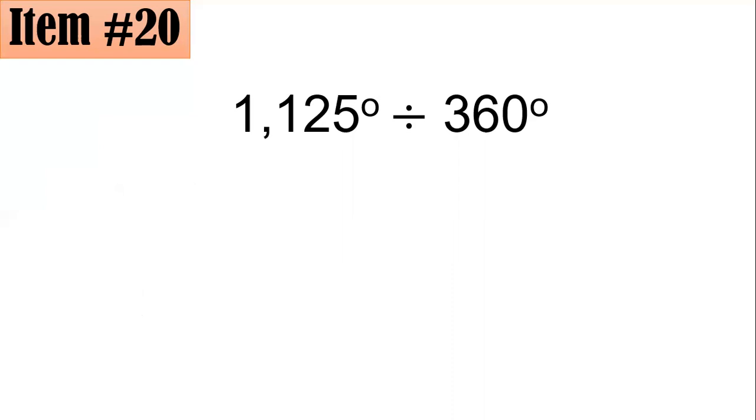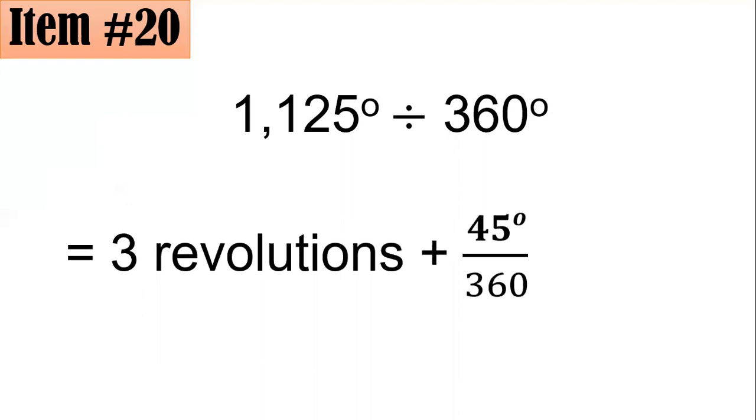So if you divide 1,125 degrees by 360 degrees, you could actually see that there are three revolutions. And you will have an extra 45 degrees over 360 degrees, which is located in the first quadrant. But remember that whatever the acute angle is in the first quadrant, then that is your reference angle. Letter B is correct.